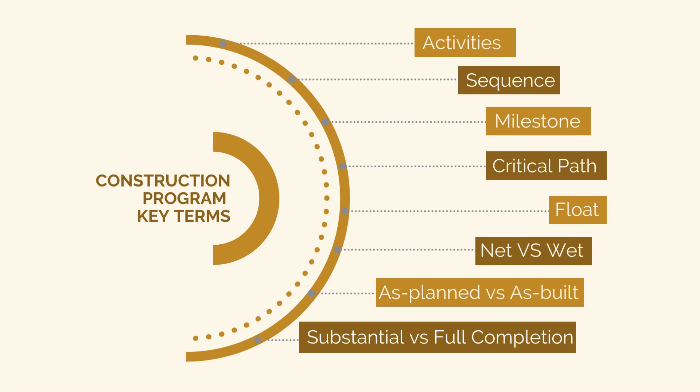Substantial completion is where works are complete except for minor defects and outstanding works. Substantial completion usually means the end project owner can use the asset — for example, a road can be opened to traffic. Full completion is when all defects and outstanding works are completed.